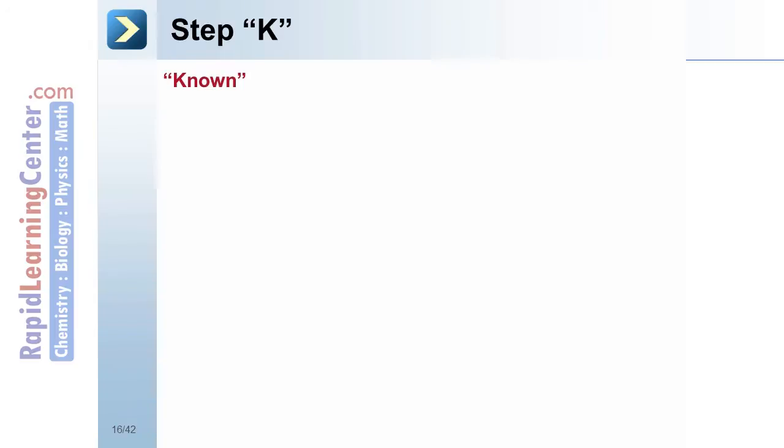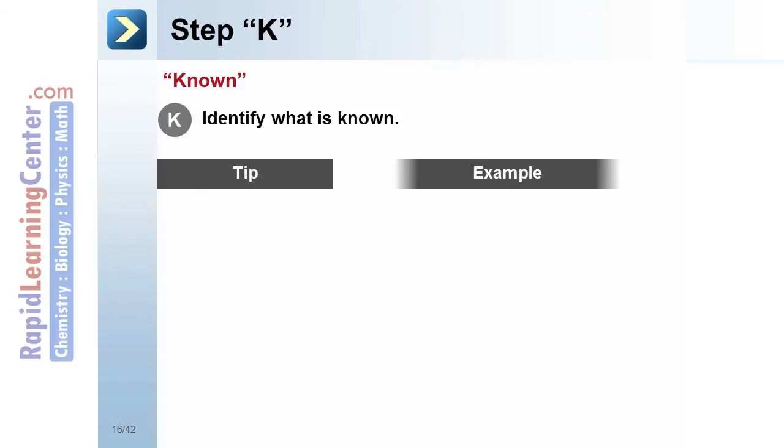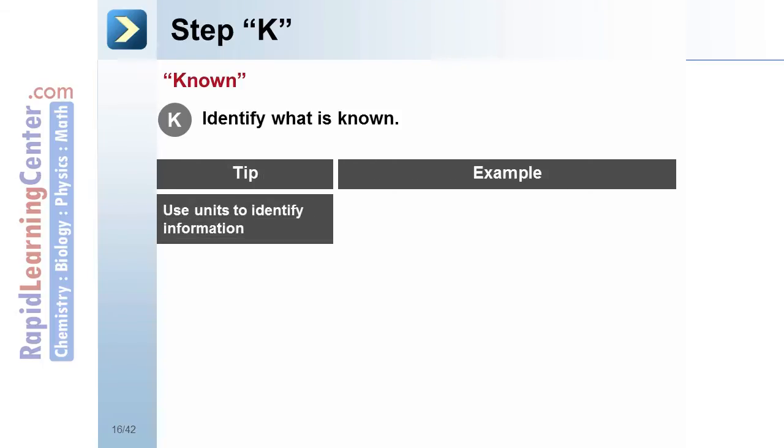Step K, known. We must identify what is known or given in the problem. For example, use units to help identify information. If it says a car travels 15.2 meters, that tells you meters is a distance unit, so they have just told us a distance.